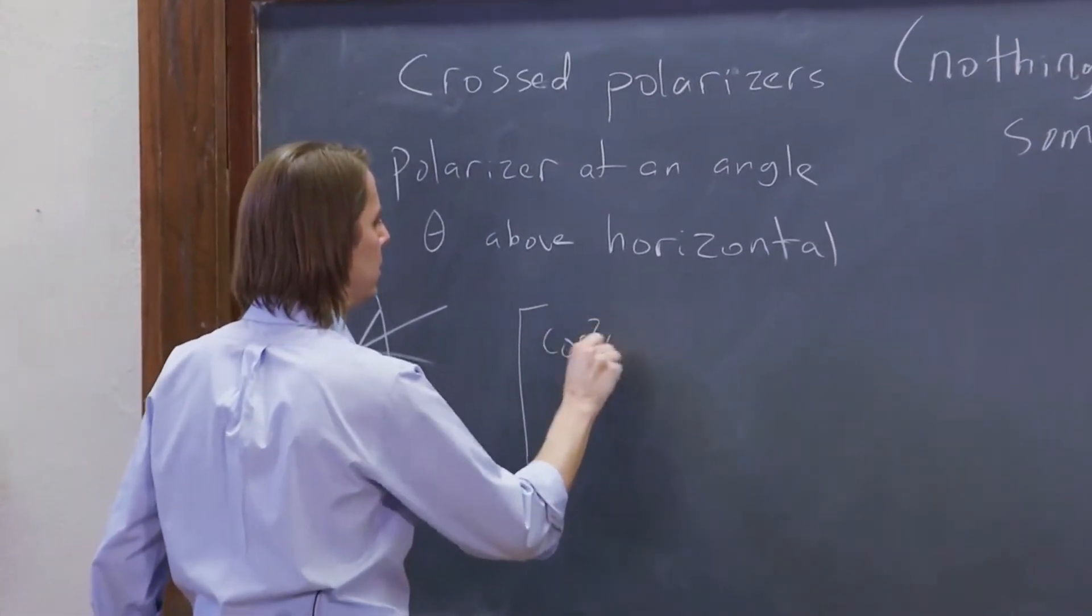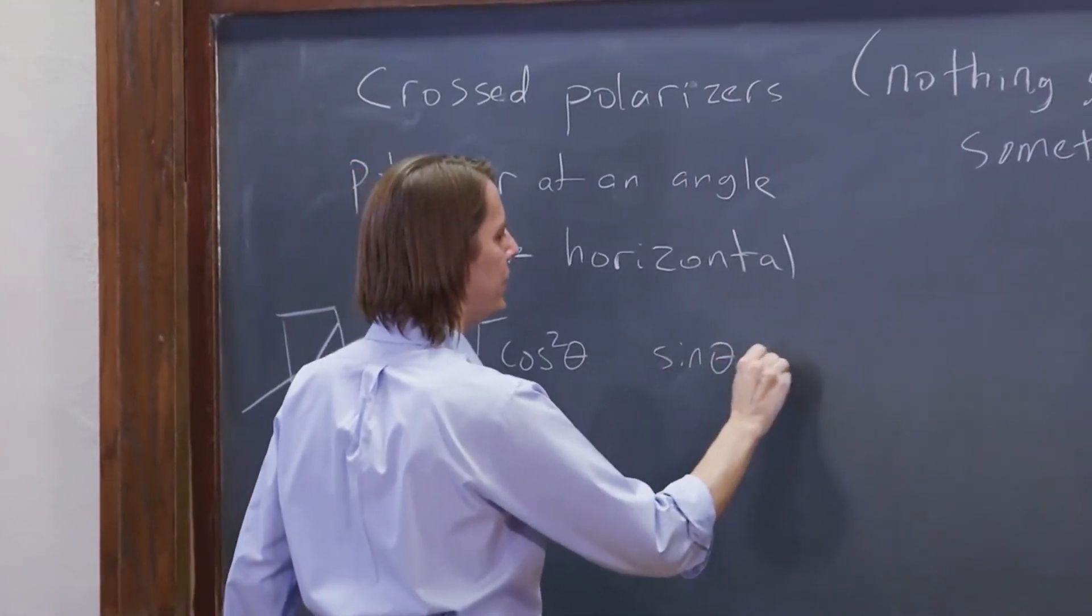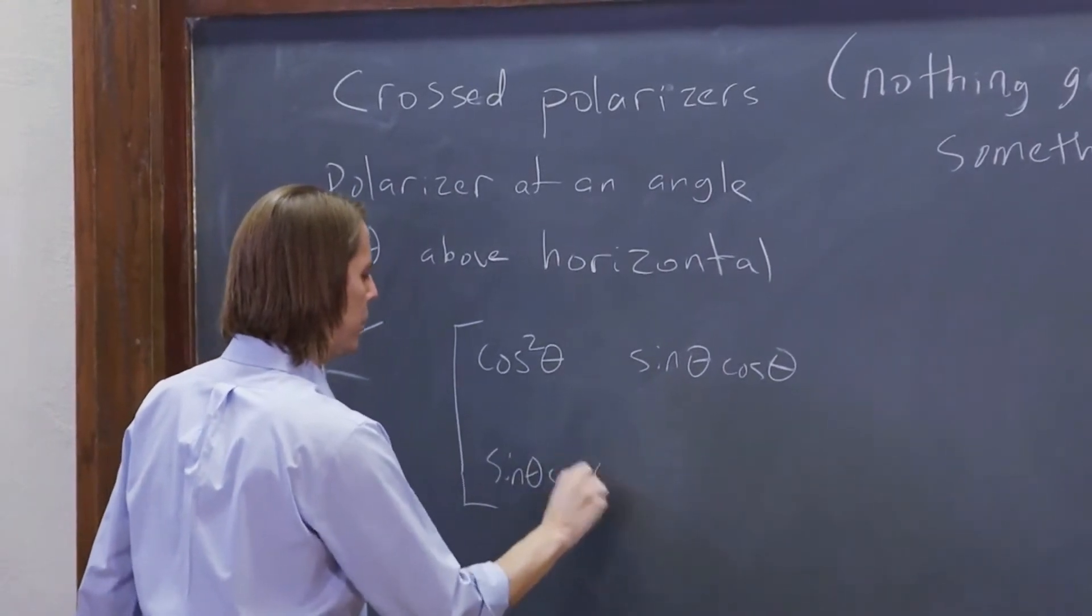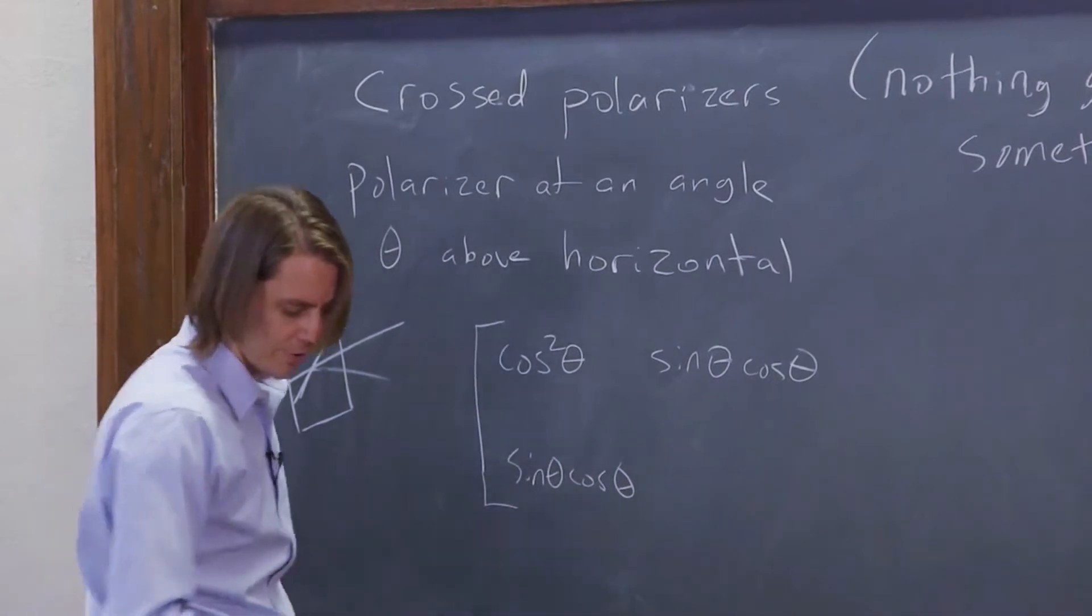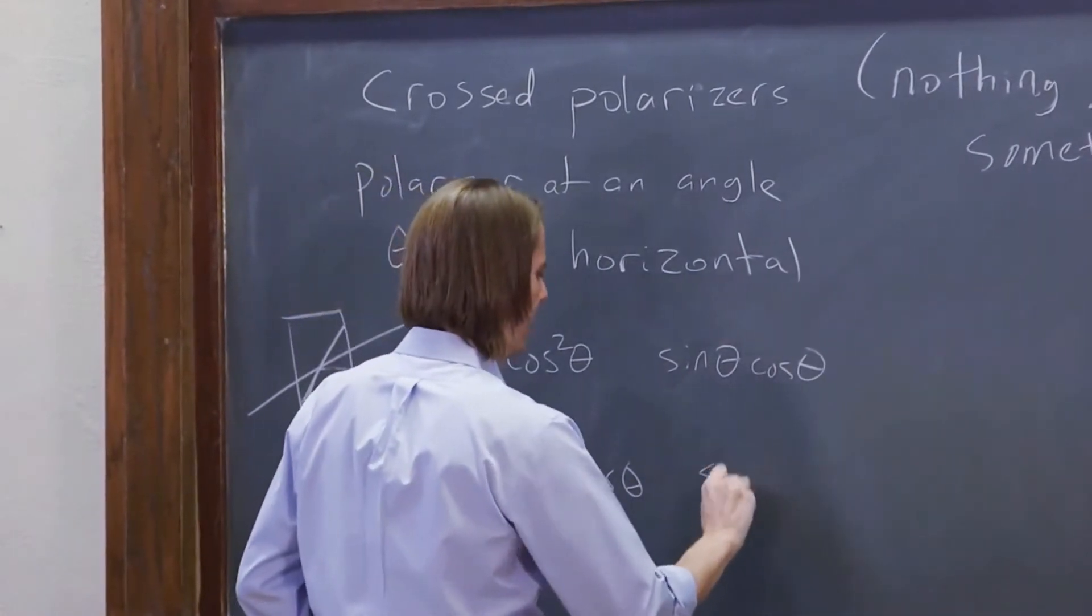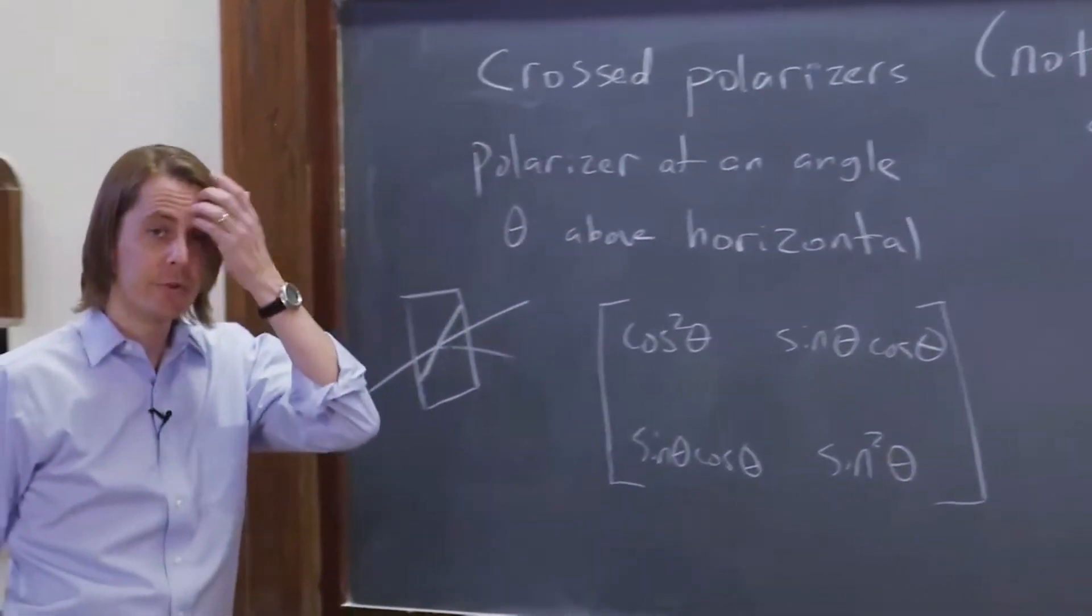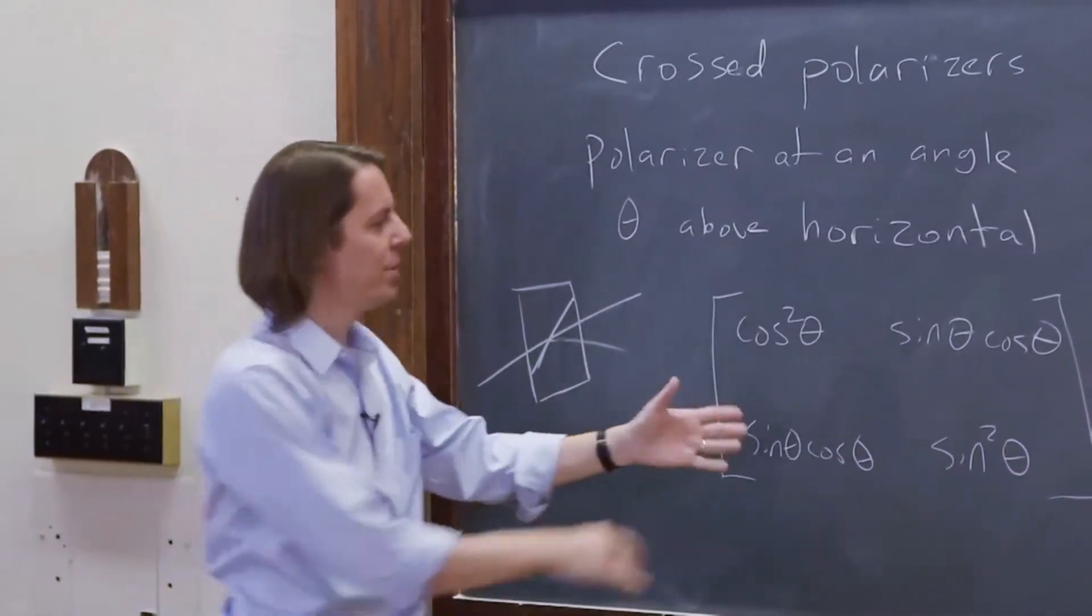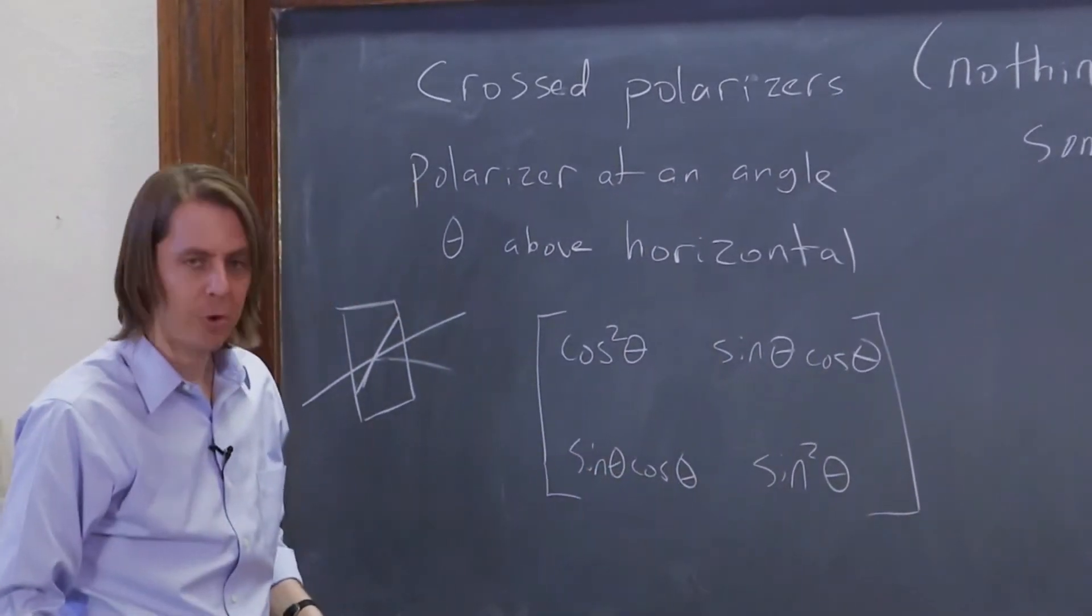It's cosine squared theta there. And then it's sine theta cosine theta, and it's sine theta cosine theta. That's sine theta times cosine theta, sine theta times cosine theta. And then it's sine squared theta down here. That's the matrix for a polarizer at an angle, and you can plug in and see it gives the right number for horizontal and vertical polarizers.